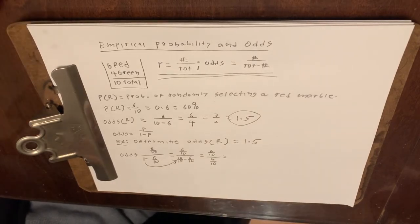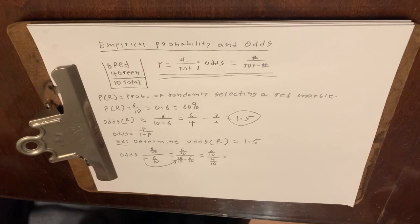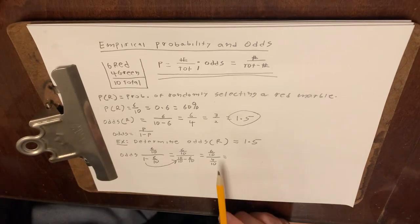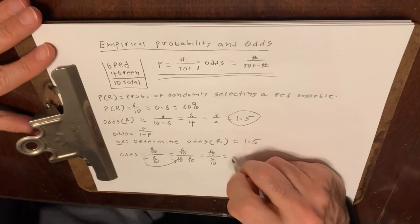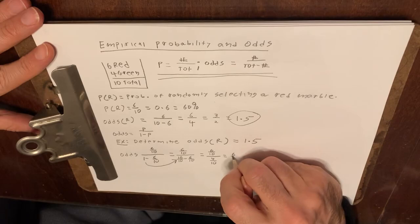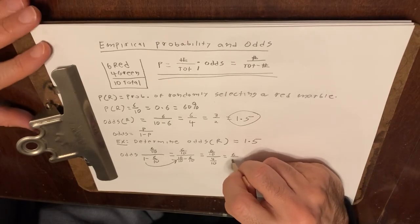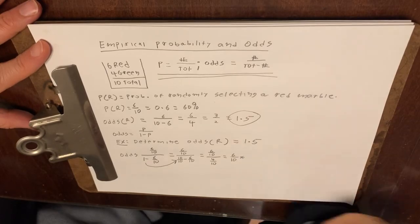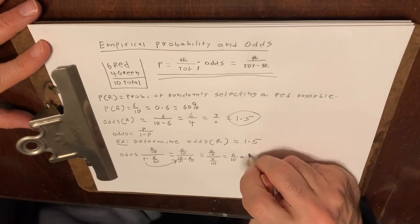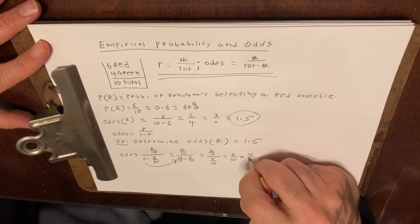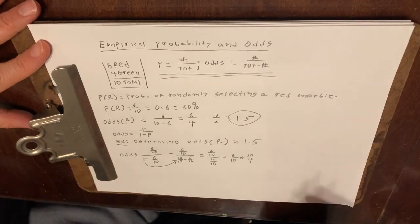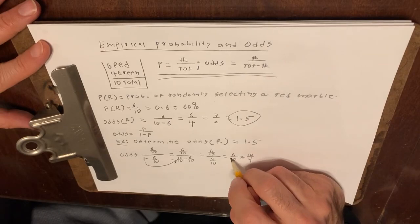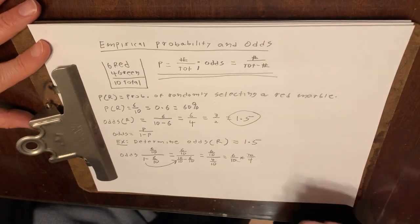So pause the video for a sec if you need to look at this. We're not quite done. So you remember in 7th grade when you learned to divide fractions, you take the numerator of this compound fraction and you multiply by the multiplicative inverse of the denominator, which is 10 fourths.